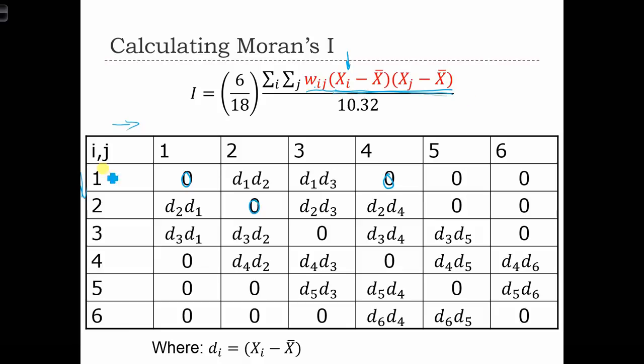So for example, area A was neighbors with B. So what we are going to have in this cell of the matrix is x_A minus x bar, which is now just d_1, and x_B minus x bar, which is d_2. And the weight of 1 with 2 was equal to 1, so we don't actually write it down, but we know we also have a 1 multiplying this thing. So this d_1, d_2 is just x_1 minus x bar times x_2 minus x bar.